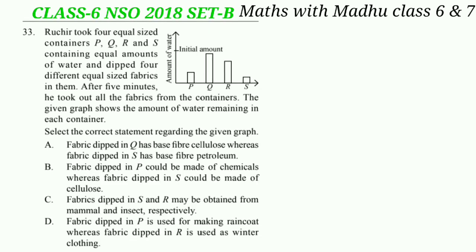Now question 33. Ruchit took 4 equal-sized containers P, Q, R and S containing equal amounts of water and dipped 4 different equal-sized fabrics in them. After 5 minutes, he took out all the fabrics from the containers. The given graph shows the amount of water remaining in each container. The order of absorption of water by the fabrics is wool, then cotton, then silk, then polyester.